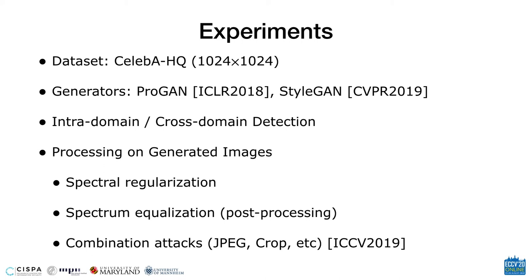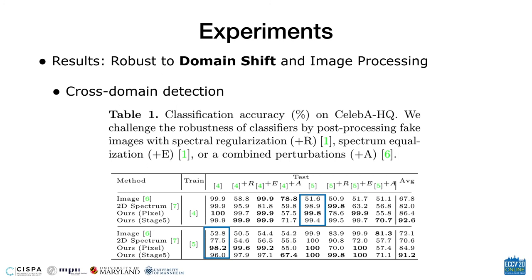To demonstrate the robustness of our method, we conduct experiments with CelebA-HQ datasets of high-resolution facial images. We generate fake images with Progressive Growing GAN and StyleGAN, and perform detection in intra-domain and cross-domain settings. As our motivation, we adjust fake images with spectral regularization and spectrum equalization, and we also follow prior work to test the detector by applying a combination of post-processing on real and fake images, including JPEG, crop, and so on.